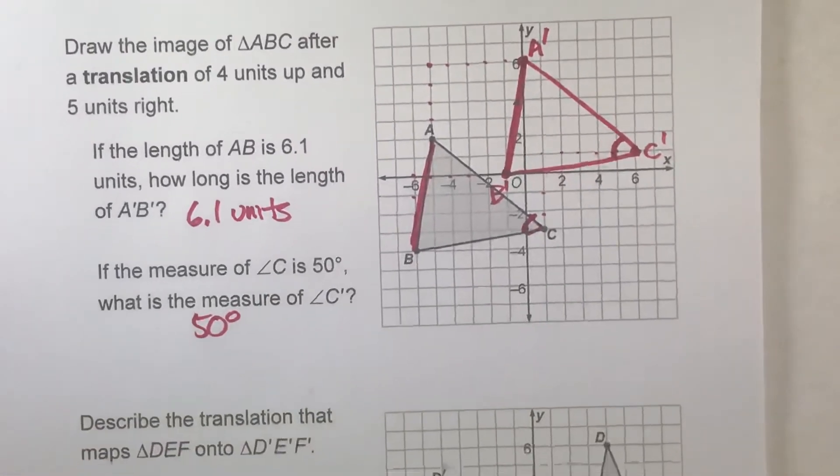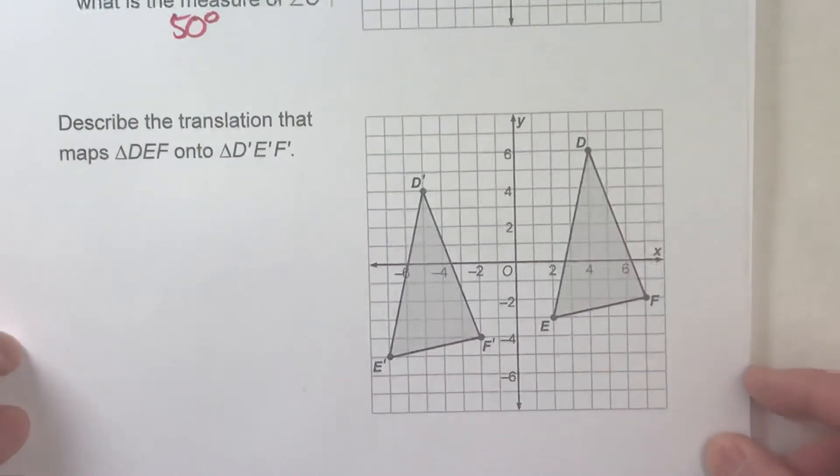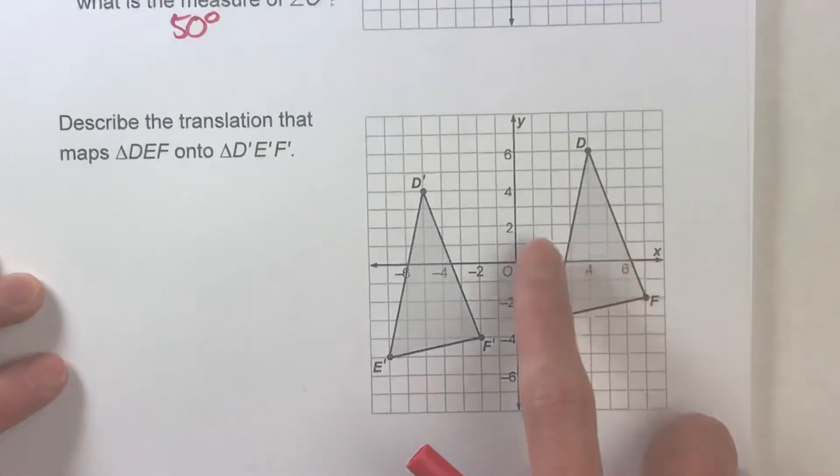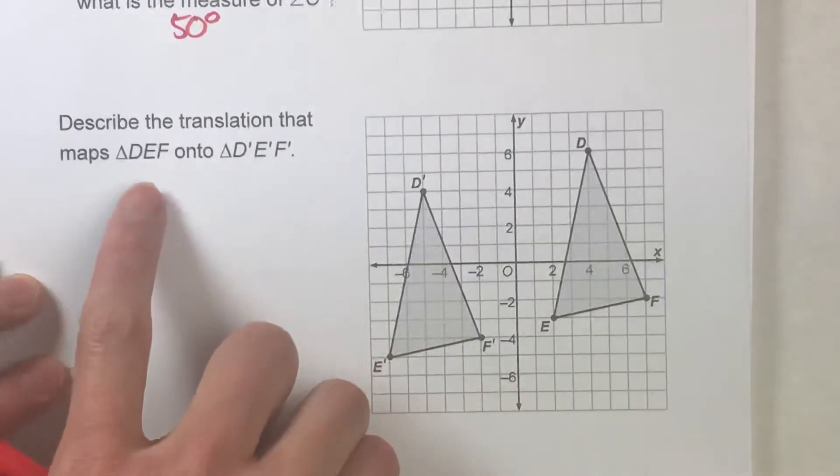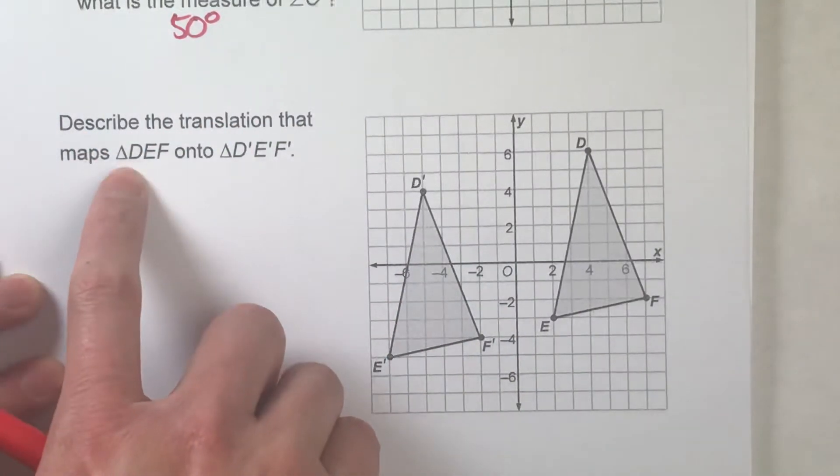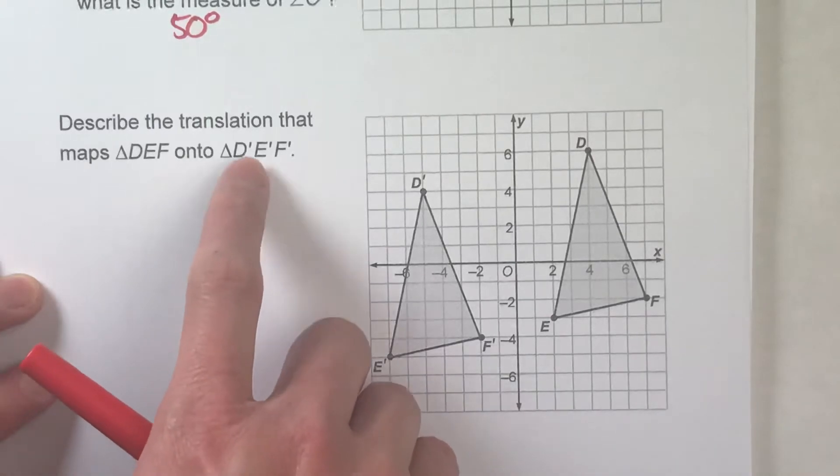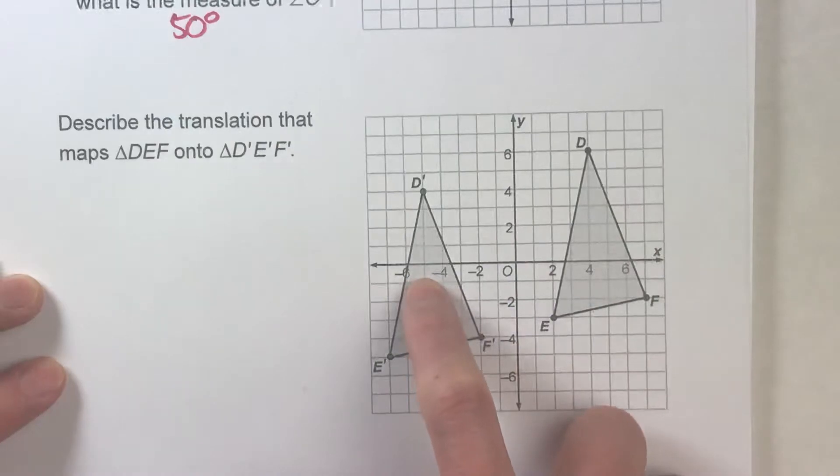Now, the last thing we're going to do here is the exact opposite. This time, I give you the original shape and a translated shape and we're going to describe the translation. So it says, describe the translation that maps triangle DEF onto triangle D prime, E prime, F prime. In other words, how does this get here using translations?